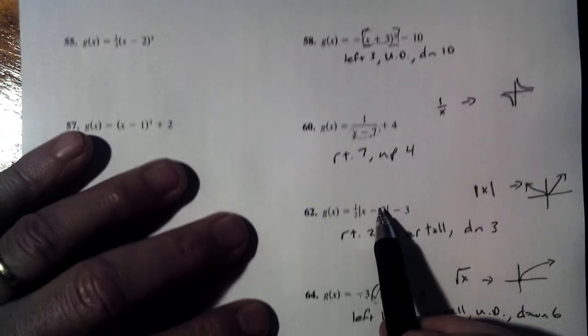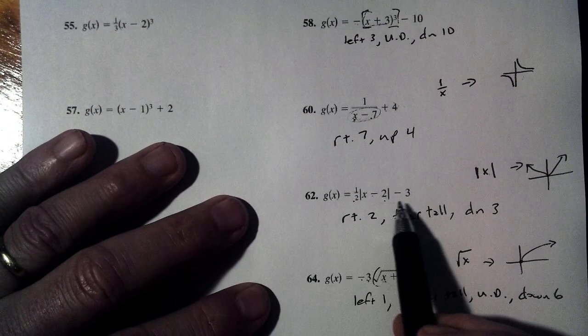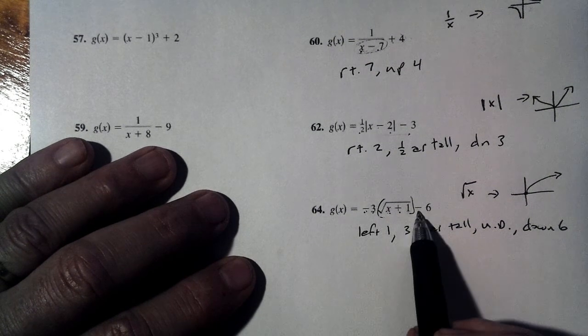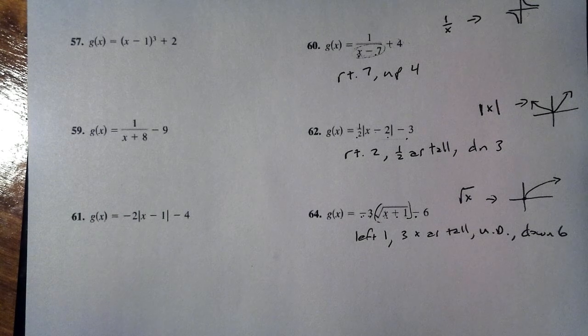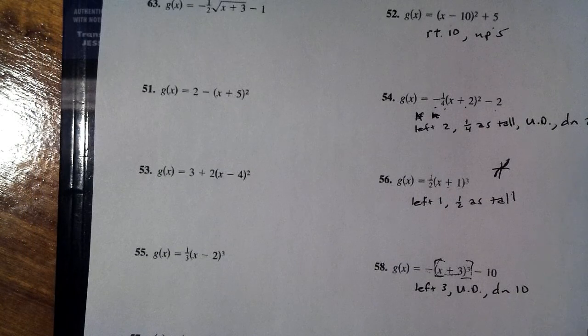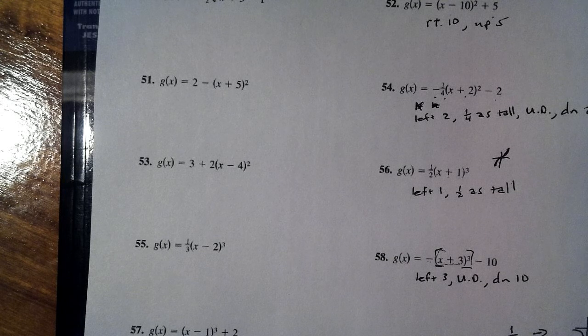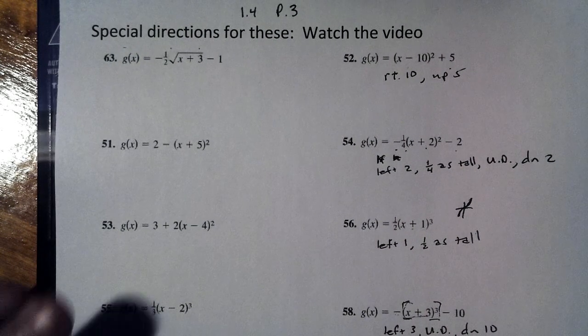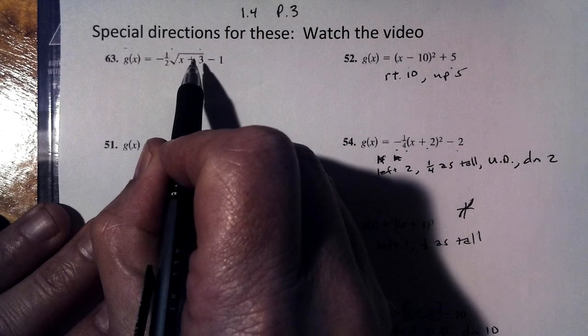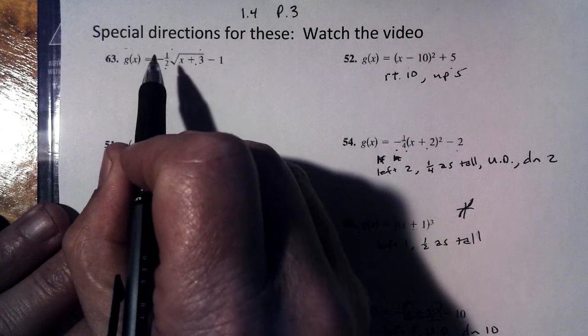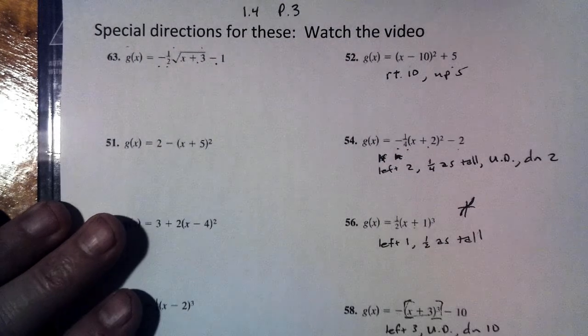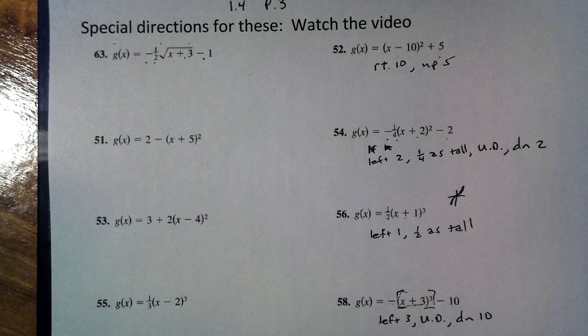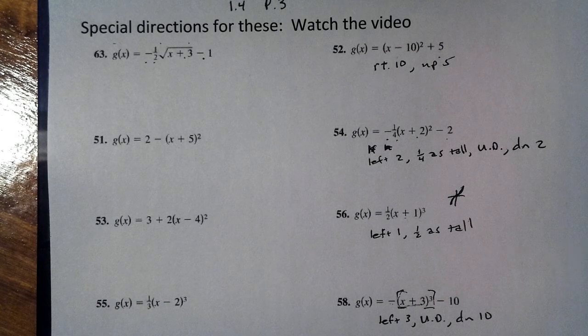Right seven, up, four, right two, half as tall, down three, left one, three times as tall, upside down, down six, and we get really, really good at it. And that's all I want you to do on this, so for instance, if we were looking at number 63, could you do that with me, maybe not quite as fast, but left three, half as tall, upside down, down one, left five, upside down, up two, because that's a plus two, so hopefully you get the picture on that.